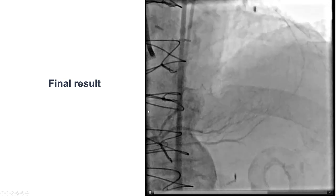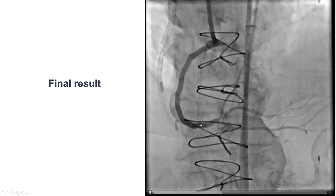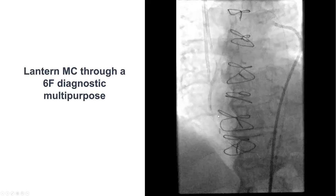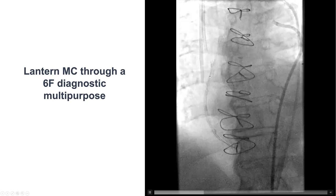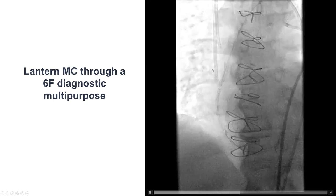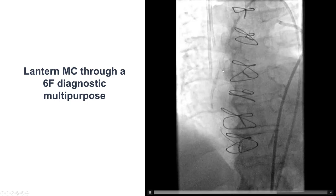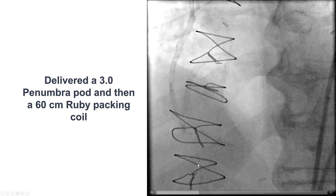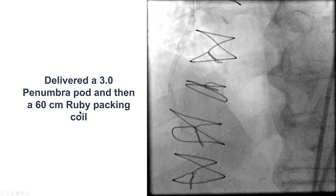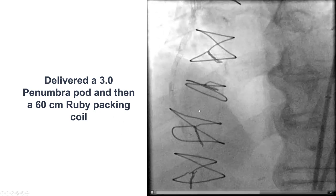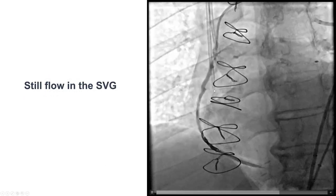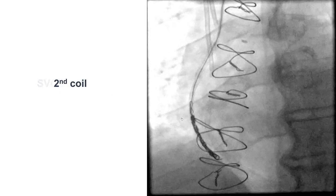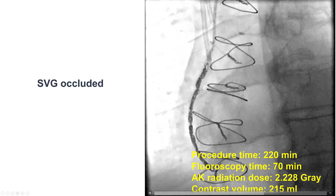What to do next? There are concerns that if you have competitive flow, you might run a risk of stent thrombosis in the native vessel within the recently placed stents. So we decided to occlude the saphenous vein graft. This can be done using either an Amplatzer vascular plug or using coils. In this case, we decided to use coils. We delivered a Lantern microcatheter through which we delivered a 3.0 Penumbra pod, and then a 60 cm long Ruby packing coil. Unfortunately, there was still slow flow into the right coronary artery, so we placed additional coils and eventually achieved occlusion of the saphenous vein graft.